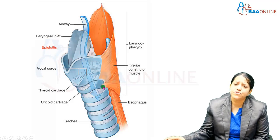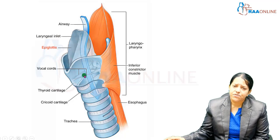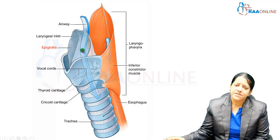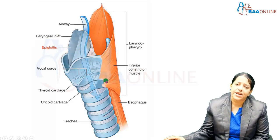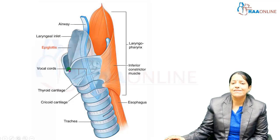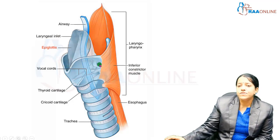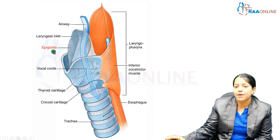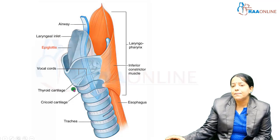The cricoid cartilage corresponds to C6. So the larynx extends from the root of the tongue up to the cricoid cartilage. Behind the larynx we have the laryngopharynx, and through the inlet of the larynx the air has to pass to go inside.